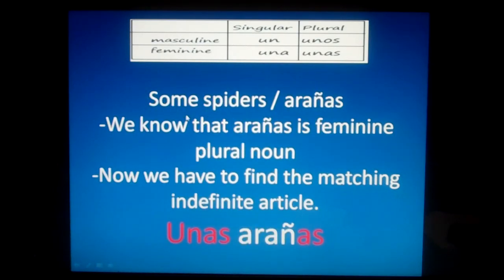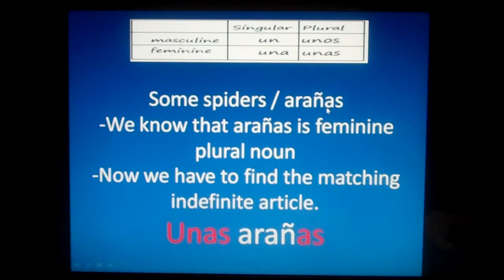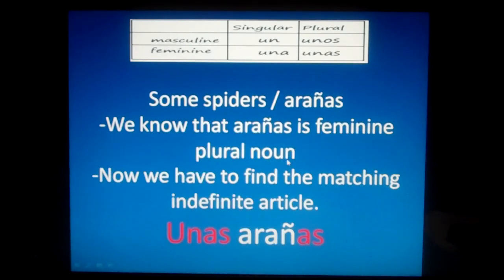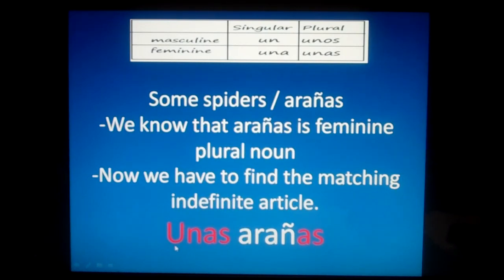Let's go to another example. How do we say in Spanish: some spiders? Well, spiders are arañas. Arañas is plural because it has an S, and before the S it has an A, which means the noun in singular form ends with an A. Most nouns that end with an A are feminine, so arañas is a feminine plural noun. We need the feminine plural indefinite article, which is unas. So we put it in front of the noun: unas arañas. We have an indefinite article that is feminine plural and a noun that is feminine plural.